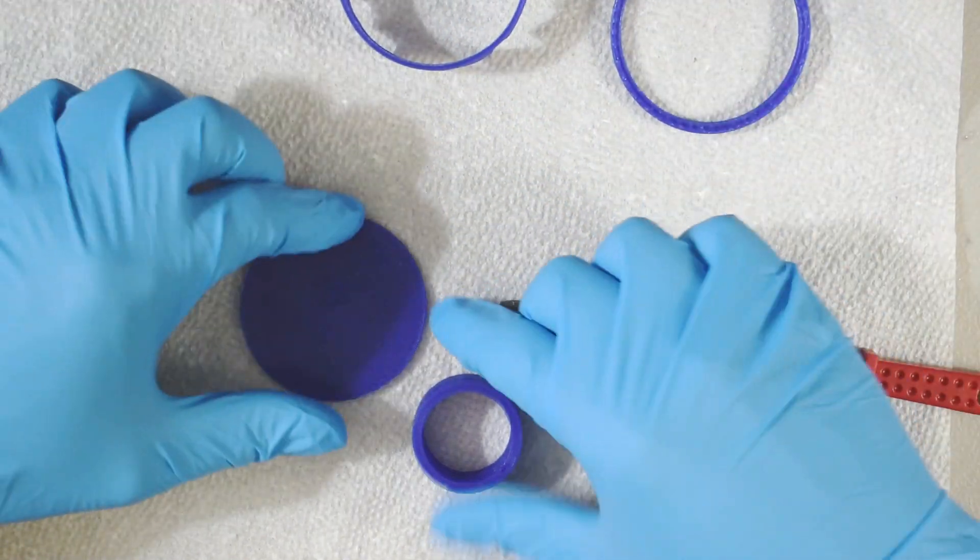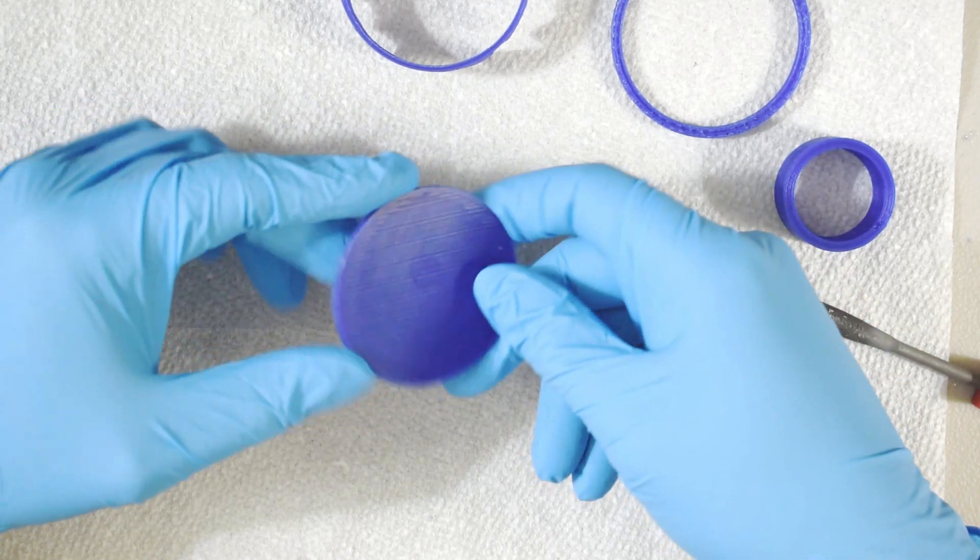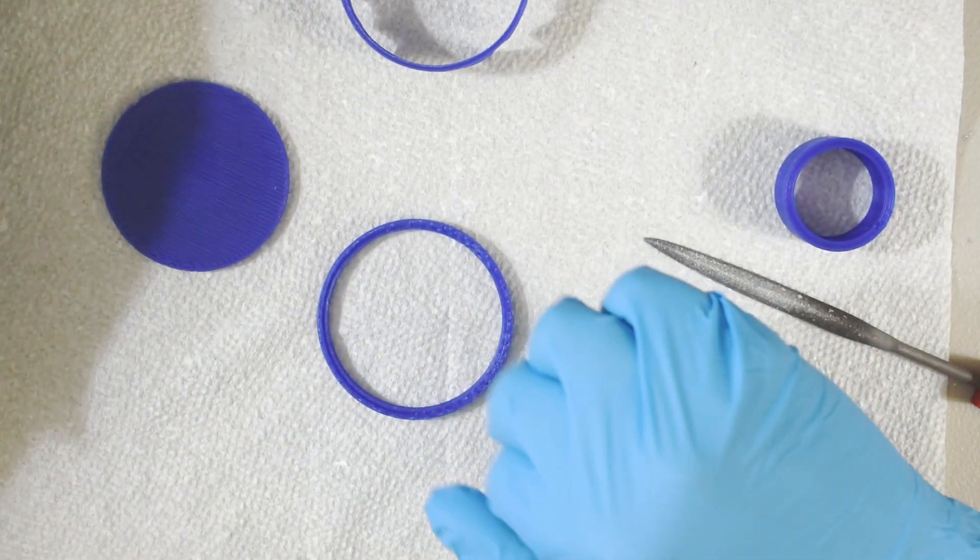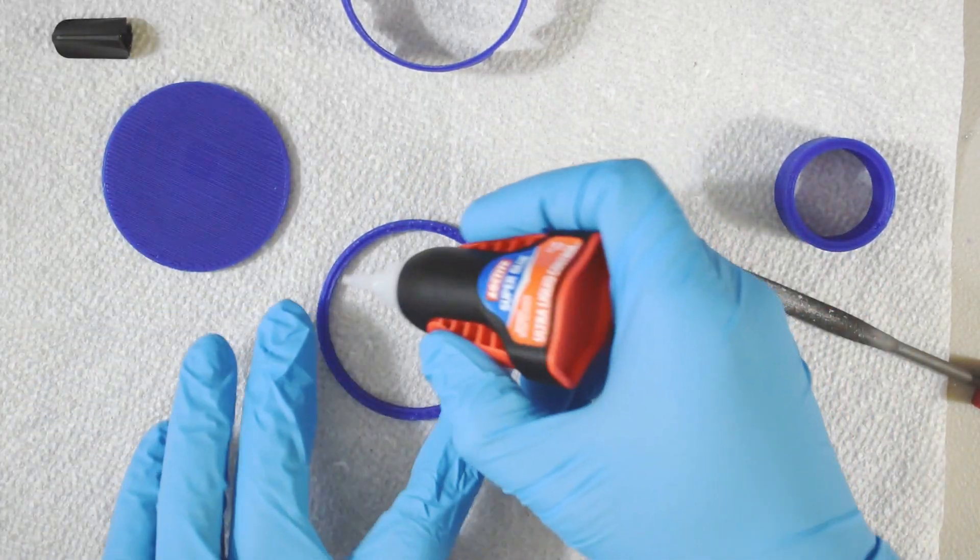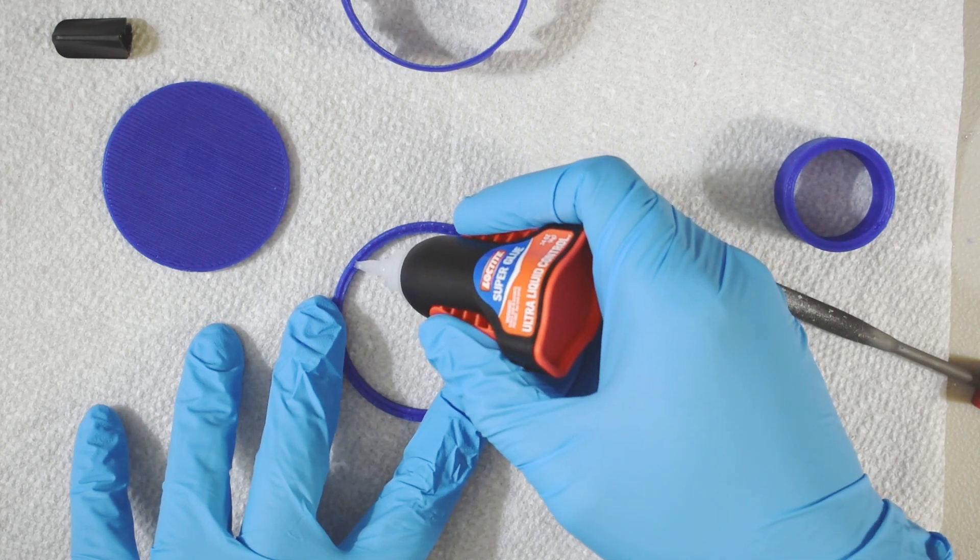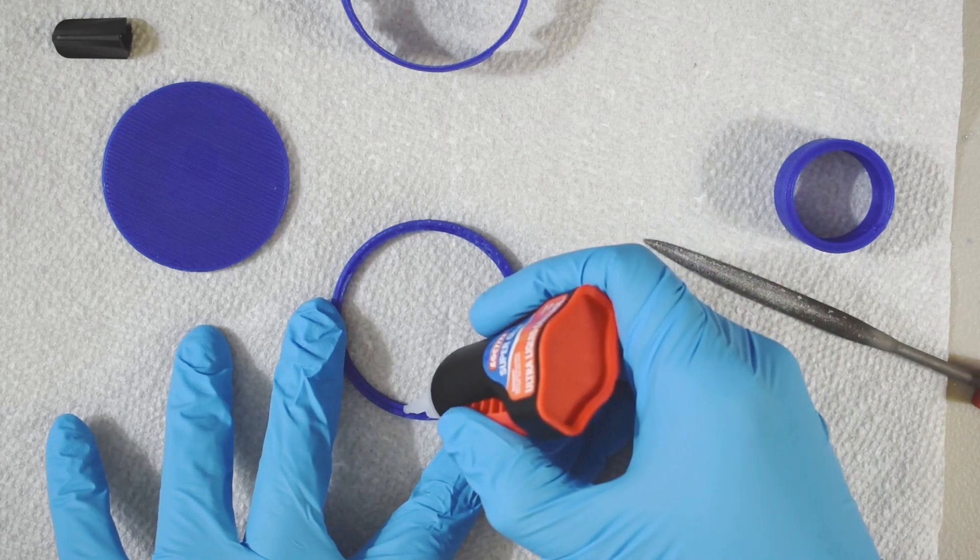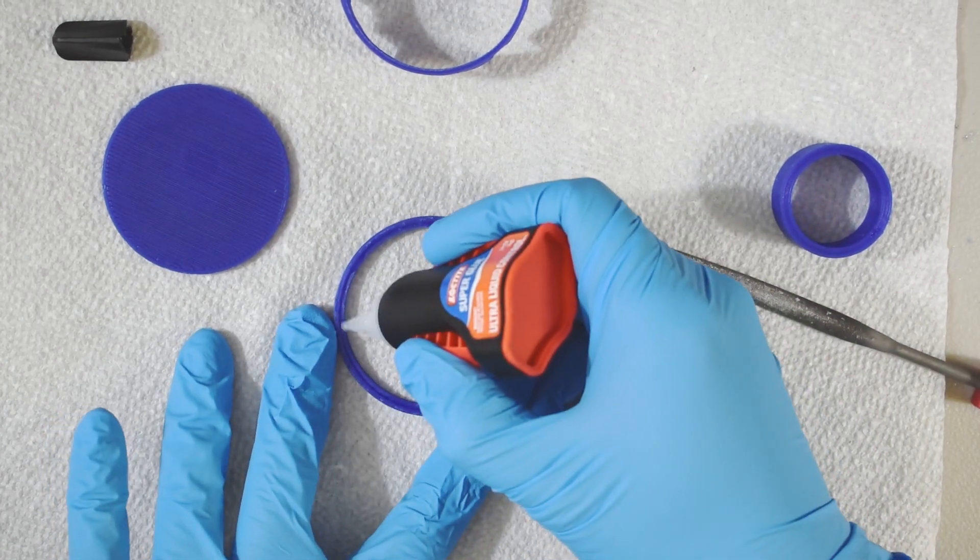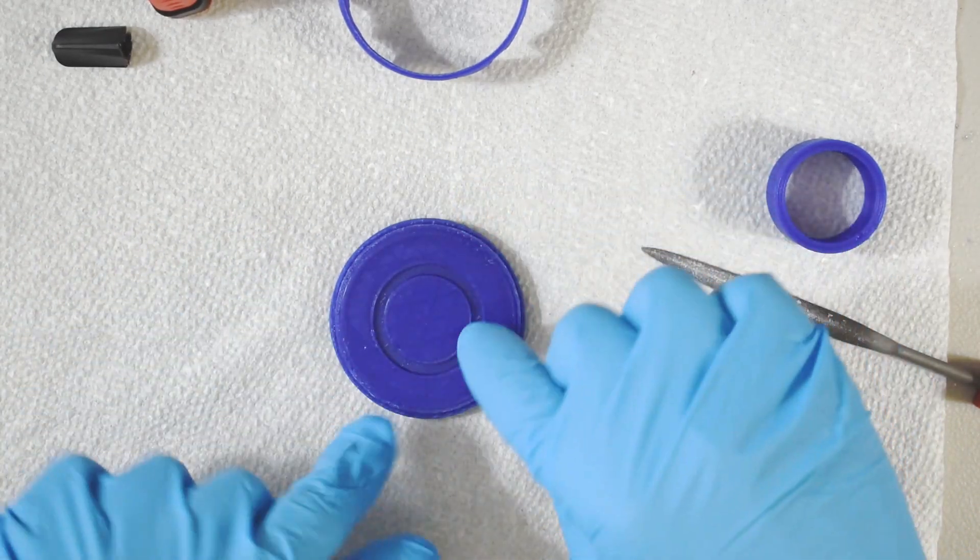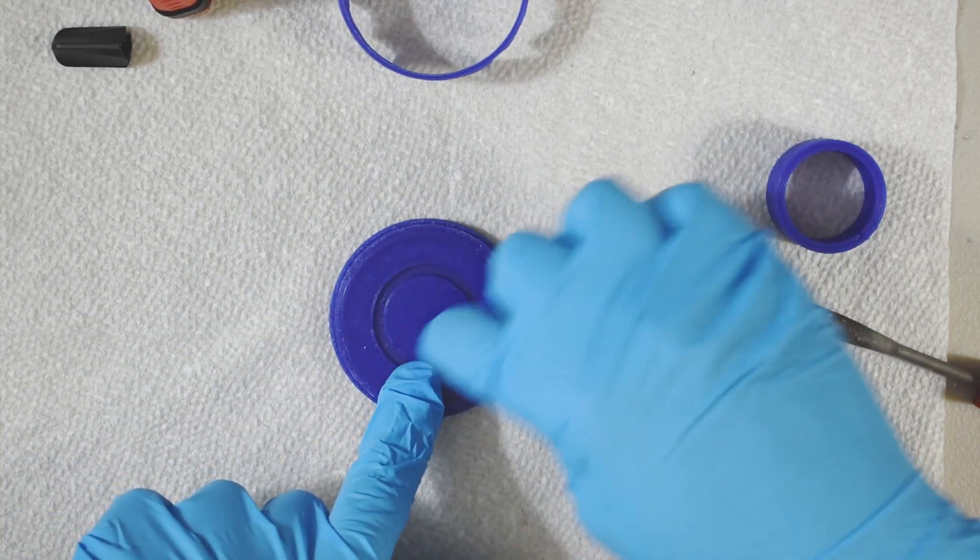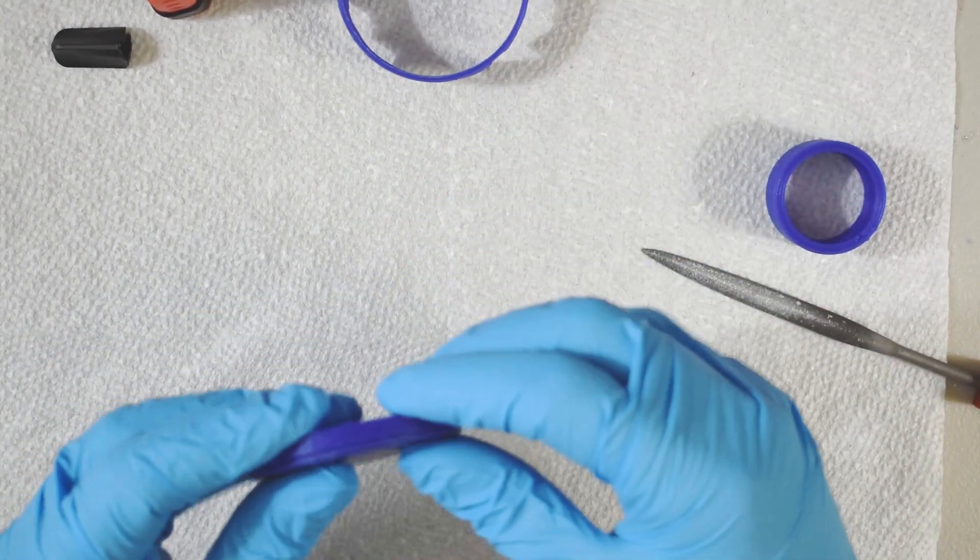What we want to do is add some glue on here. I'm just going to use a few dabs in different spots. Then I'll take this piece, put it on here with the ring up this groove, make sure that it snaps into place.